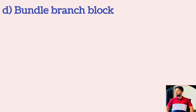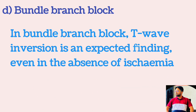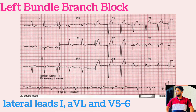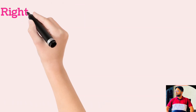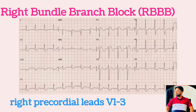Bundle branch block: In bundle branch block, T-wave inversion is an expected finding even in the absence of ischemia. Left bundle branch block produces T-wave inversion in the lateral leads 1, AVL, V5, V6. Right bundle branch block produces T-wave inversion in the right precordial leads V1 to V3.